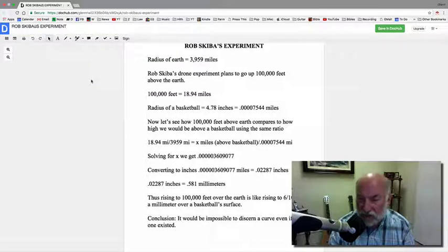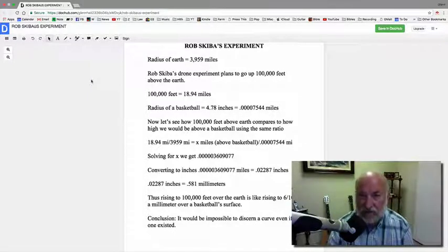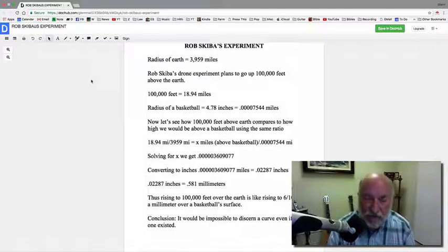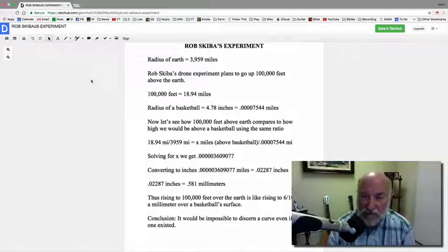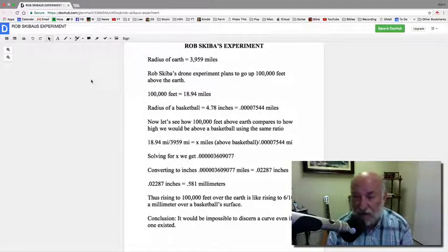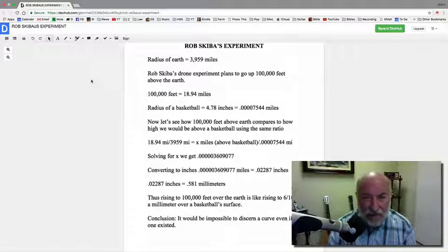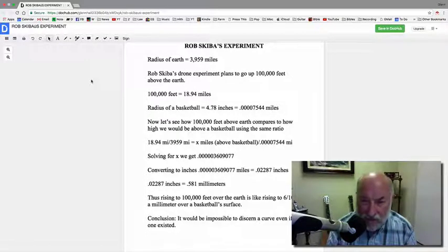I mean, think of it. Think of yourself being 0.0287 inches above the surface of a basketball. Well, you're barely above the surface. You could not possibly see whether that surface began to go down like a sphere would or whether that surface was just flat in front of you. So my point is that I believe that Rob Skiba's experiment will really tell us nothing at all.